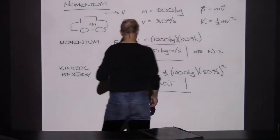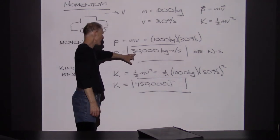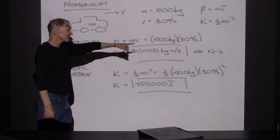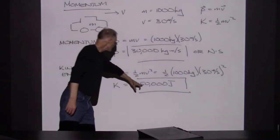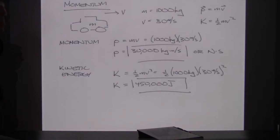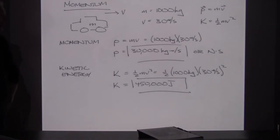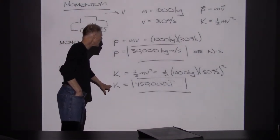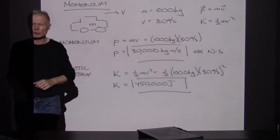When I calculate the momentum, I'm getting 30,000 units of momentum — 30,000 newton seconds. I kind of like the newton seconds, it's shorter, versus 450,000 joules. So what do I have more of — kinetic energy or momentum? That's a trick question because they can't be compared since they're in different units. Momentum has different units from kinetic energy; I can't do a comparison of which is more.